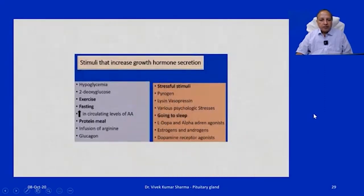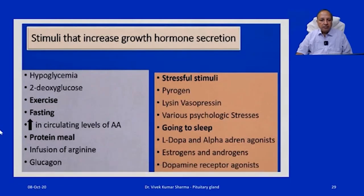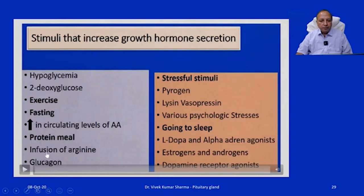Stimuli that cause an increase in growth hormone secretion include exercise and fasting — the concept of intermittent fasting may increase growth hormone secretion as one mechanism. Protein meals, infusion of arginine, glucagon, and hypoglycemia all cause an increase in growth hormone secretion. Stressful stimuli, pyrogens, going to sleep, psychological stressors, estrogens, androgens, and various other factors also increase growth hormone secretion.